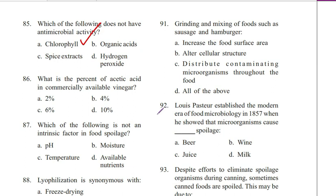Question 86. What is the percent of acetic acid in commercially available vinegar? Options: 2%, 4%, 6%, 10%. Answer is D. 4%.